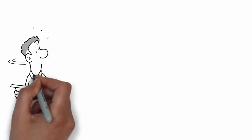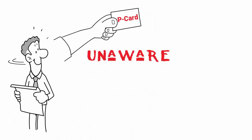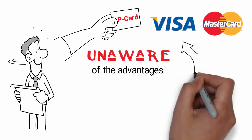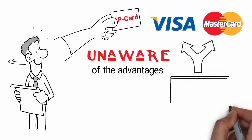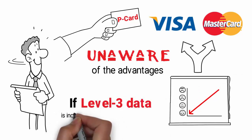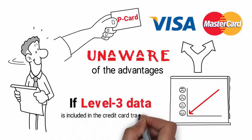It's regrettable that many in the contracting industry are unaware of the advantages available for accepting these cards correctly. To support acceptance of corporate and government P-Cards, MasterCard and Visa have reduced interchange rates associated with these cards if Level 3 data is included in the credit card transaction.